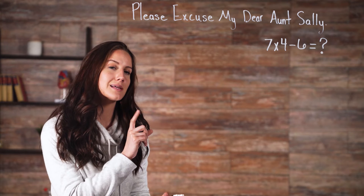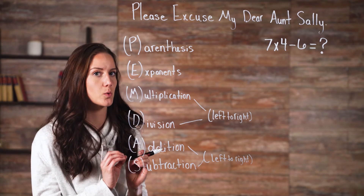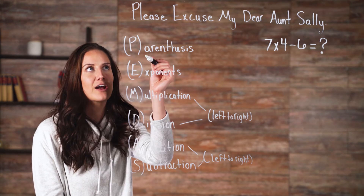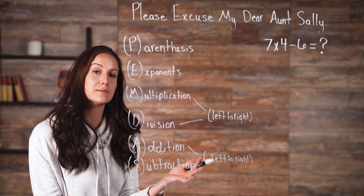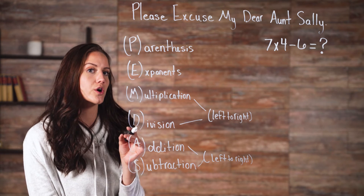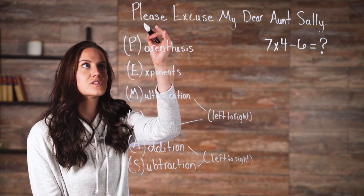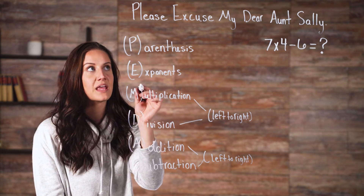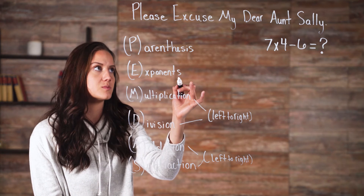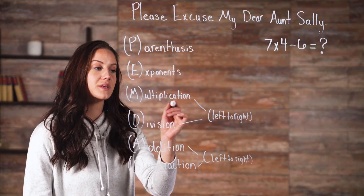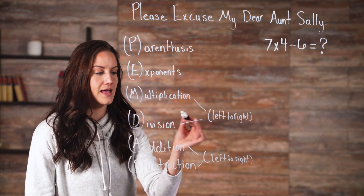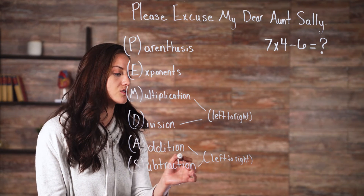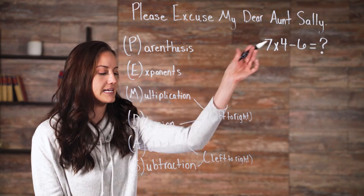And this brings us back to Aunt Sally. Operations have a specific order, and this is what 'Please Excuse My Dear Aunt Sally' helps us to understand. It's an acronym, PEMDAS, that tells us in which order we should solve a mathematical problem. First is Please, which stands for Parentheses — we solve everything inside the parentheses first. Then Excuse, which is for Exponents. Then Multiplication (My) and Division (Dear), which happen from left to right. And then Addition and Subtraction (Aunt and Sally), which also happen from left to right.